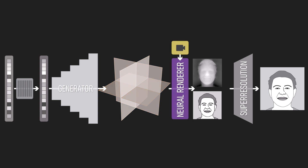This tri-plane representation is fed to a neural renderer, which also receives camera parameters and renders the subject from the given viewpoint, yielding RGB and depth. Finally, the output is upsampled using a super-resolution module.